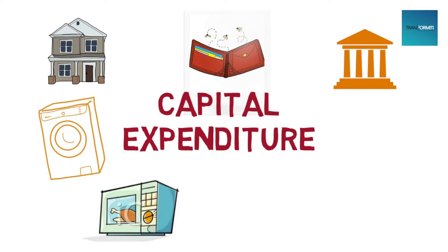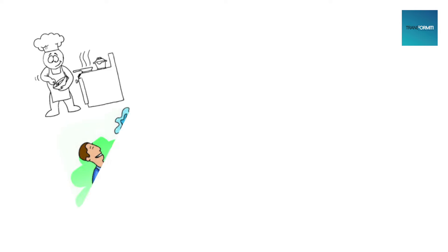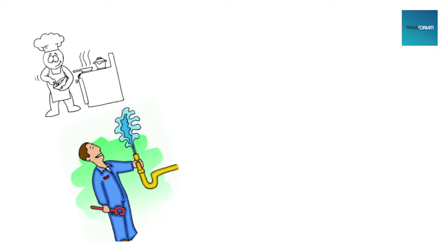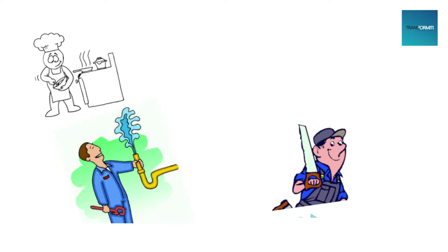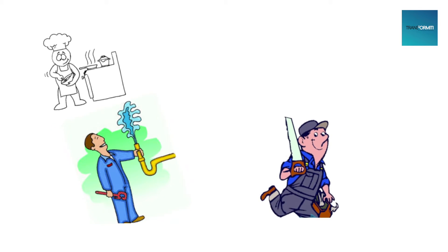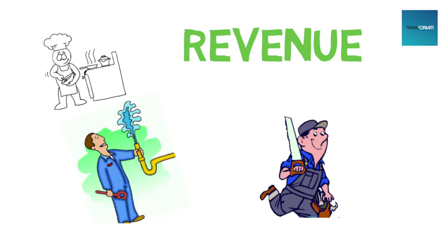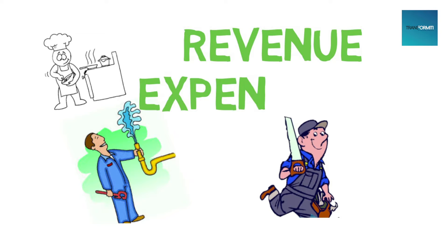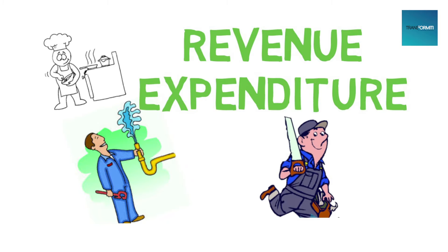Similarly, the government spends money to build assets such as roads which are useful in the long run. You also hire domestic help and cooks in your home and pay them salaries, and you incur administrative costs for plumbing and carpentry work. The expenses on salaries and administrative costs are called revenue expenditure.